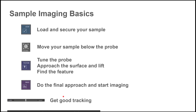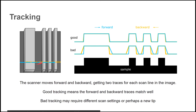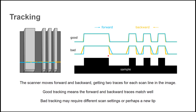While imaging, you should monitor the scan to get good tracking. When taking an image, the scanner will move forward and backward, getting two traces for each scan line. Good tracking means that the forward and backward traces match well. When the tool isn't tracking well, there will be discrepancies between the forward and backward scans. When this happens, you might need to reduce the scan speed, lower the probe set point, or even exchange the probe.